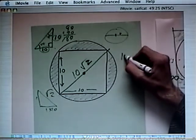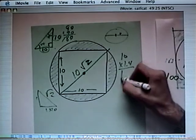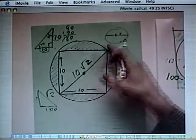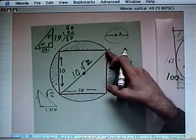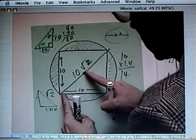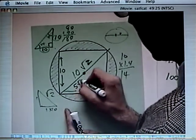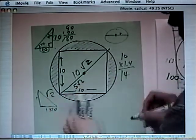You can say 10 times 1.4 is 14. So this is about 14. And so this section here is 5 root 2, or it's about 7.